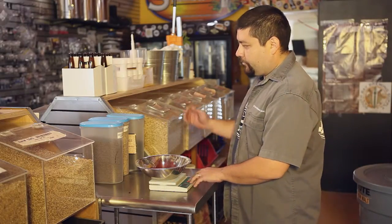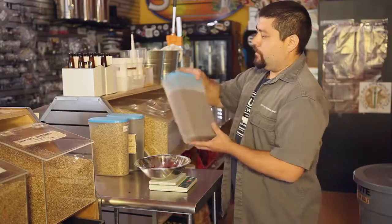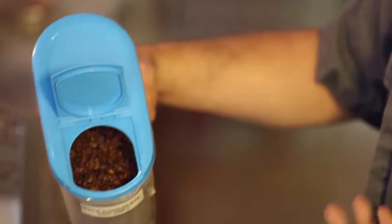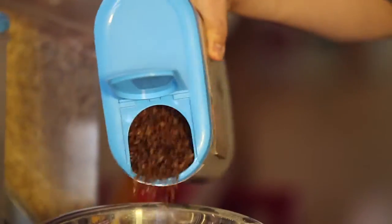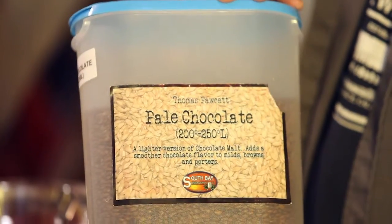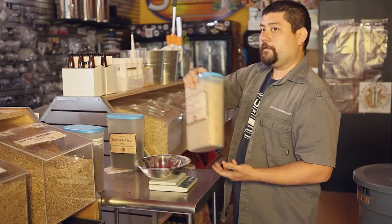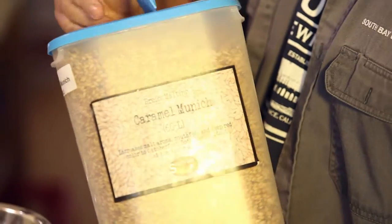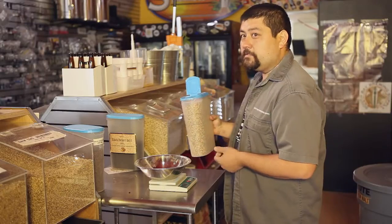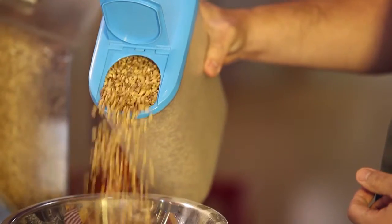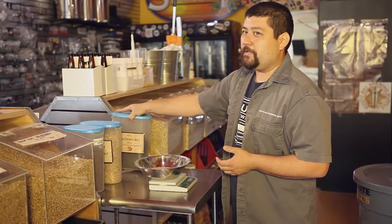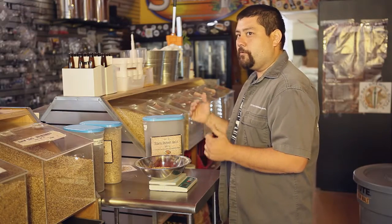Since we're making a porter today, we're going to weigh out some grains. We're going to start with a little pale chocolate just to give it a hint of color and some flavor, some chocolate note background. We'll probably use about four ounces in this recipe. We're also going to use some Crystal Munich, which is like 60L for the color, and we'll do four ounces of this as well. We're also going to mix in some black patent to give that dark color. They all could be mixed together, there's no real need to keep them separate. We're going to mash them all together.